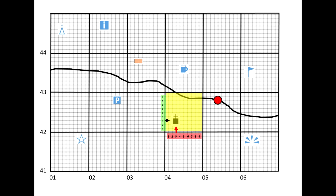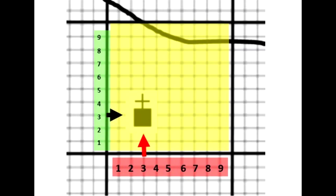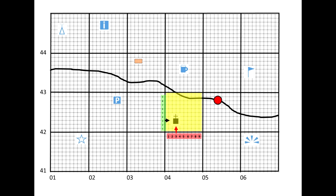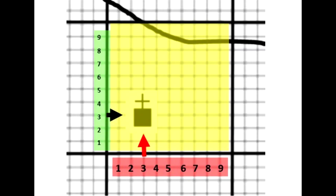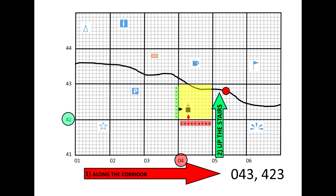Again we're going to go along the corridor — so it's zero four. To be more accurate, we go across three points, so the first part of our six-figure grid reference for the church is zero four three. Then we follow the same principle and go up the stairs: four one, four two. Again, to be more accurate, it's four two three. So our six-figure grid reference for the church is zero four three, four two three.